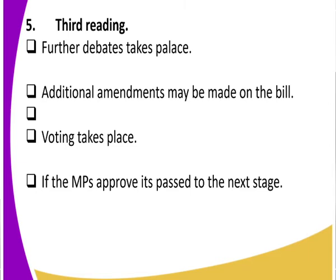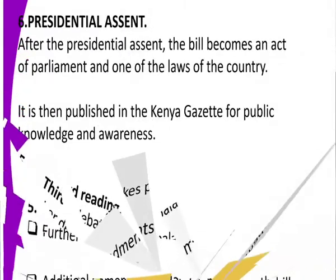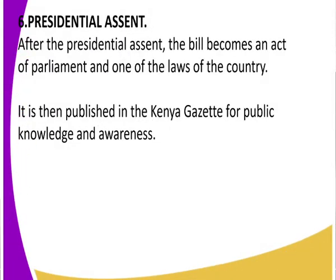From the third reading, it goes to the presidential assent. This is where the president assents the bill to become a law. After the presidential assent, the bill becomes an act of parliament and one of the laws of the country. It is then published in the Kenya Gazette for public knowledge and awareness.